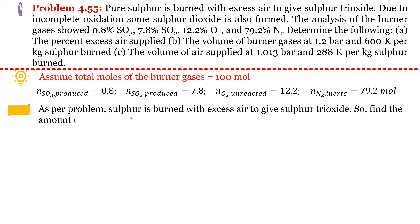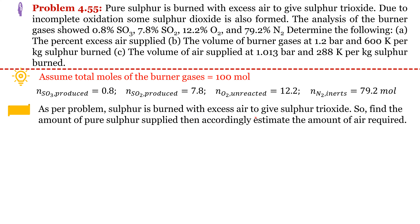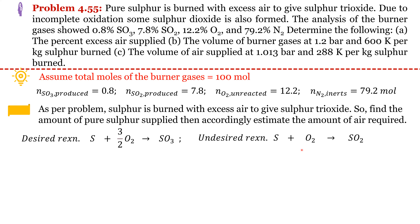As per the problem, sulfur is burned with excess air to produce sulfur trioxide. We will write balanced chemical reactions and perform back calculations. The desired reaction: sulfur combines with oxygen to give SO3. The undesired reaction: sulfur combines with oxygen to give SO2.